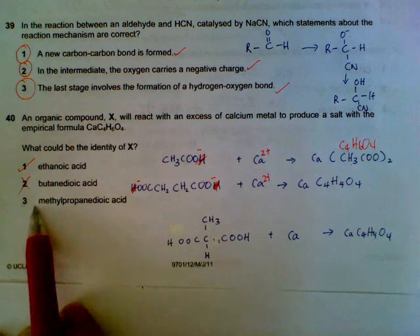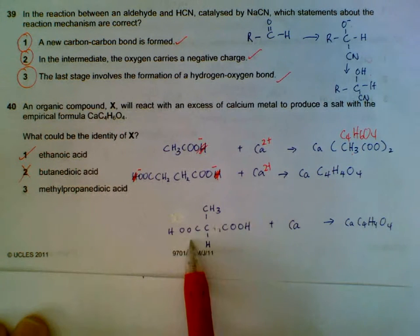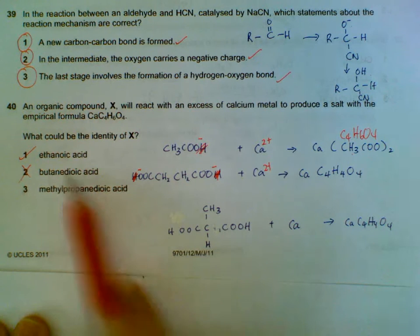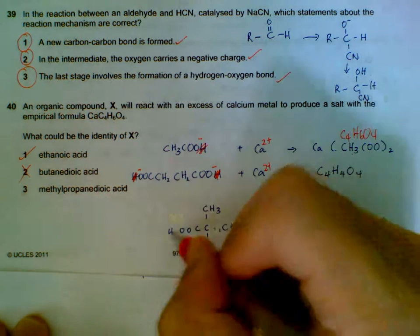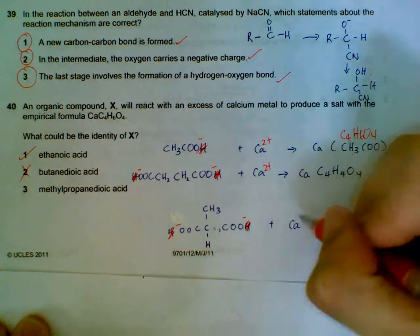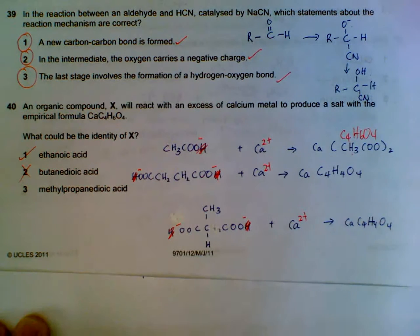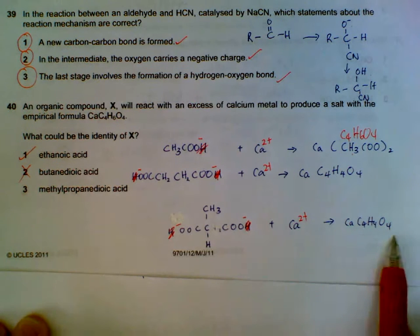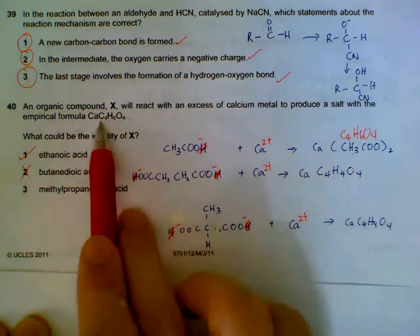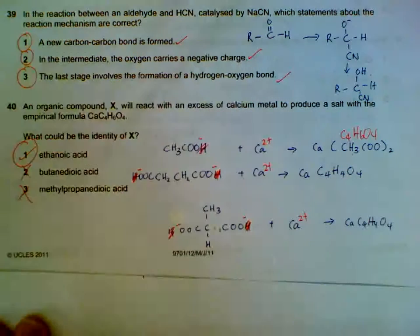Okay, we check. This is methylpropanedioic acid. Dioic, like this one, means there are 2 acidic groups. So this H will be gone. So it's this H. We have a 2 minus charge here, we have a 2 plus charge here. Again, the ratio will be 1 is to 1. We will end up with this formula here, which is not comparable to the one we want. So only statement 1 is correct.